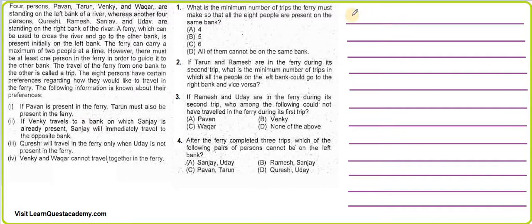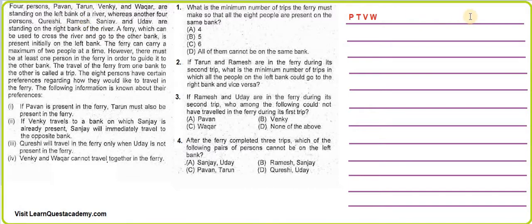So on the left side we have P, T, V, and W. On the right side we have Q, R, S, and U. Now there are certain preferences, so let's write those as well.